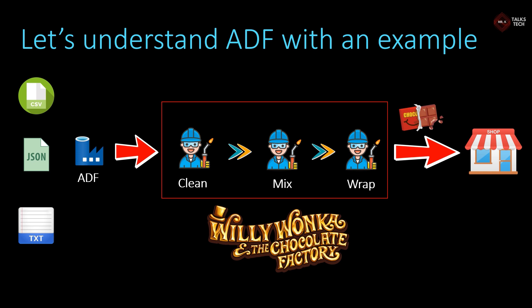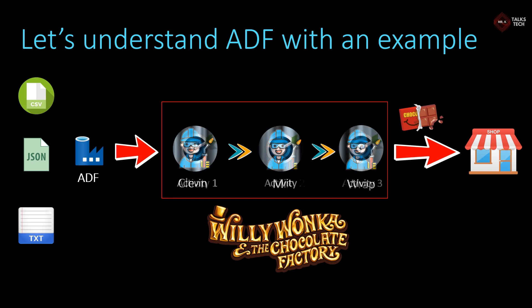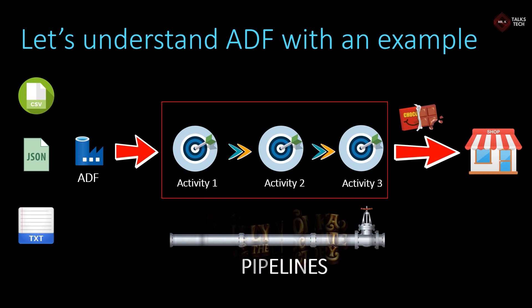In the three workers' process, ADF performs activities. Different activities are done — activity one, activity two, activity three. ADF handles all of these. This ADF performs different data processing and different data activities. ADF uses pipelines to run these different activities, and the data is manipulated through them.